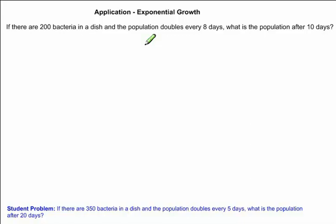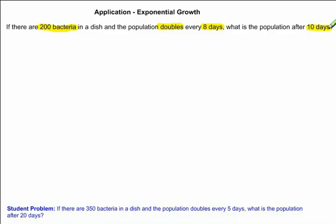You will notice a problem at the bottom of your screen. This is for you to complete after we go through the solution for this given problem. Let's start off by highlighting the important information in the question. We know that we start with 200 bacteria — this is the population when time equals 0, also known as the initial population. We know that the population doubles every 8 days, and we want to find out what the population will be after 10 days.